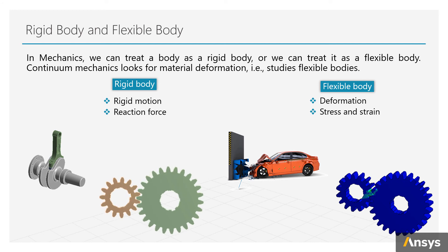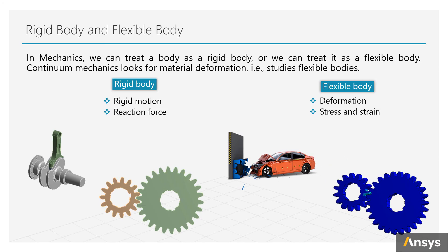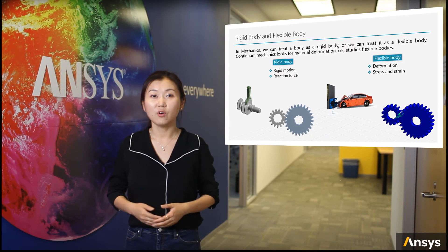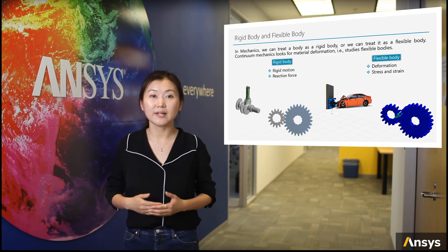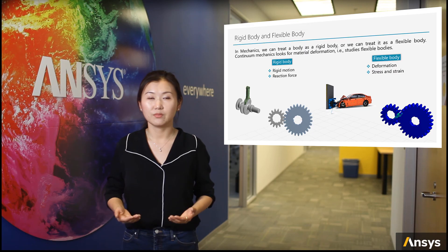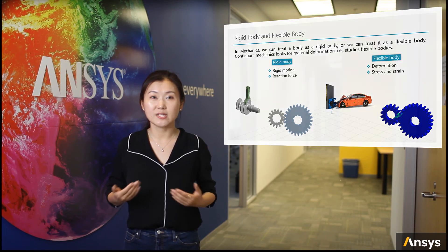On the other side, when a body is treated as a flexible body, we look for material deformation of the body under external loads. For example, the deformation of a car after a strong impact, or the gear teeth deformation caused by contact between different gears. For most of this course, we treat bodies as flexible bodies and look for deformation of them. With the scope of this course defined, now let's get started.